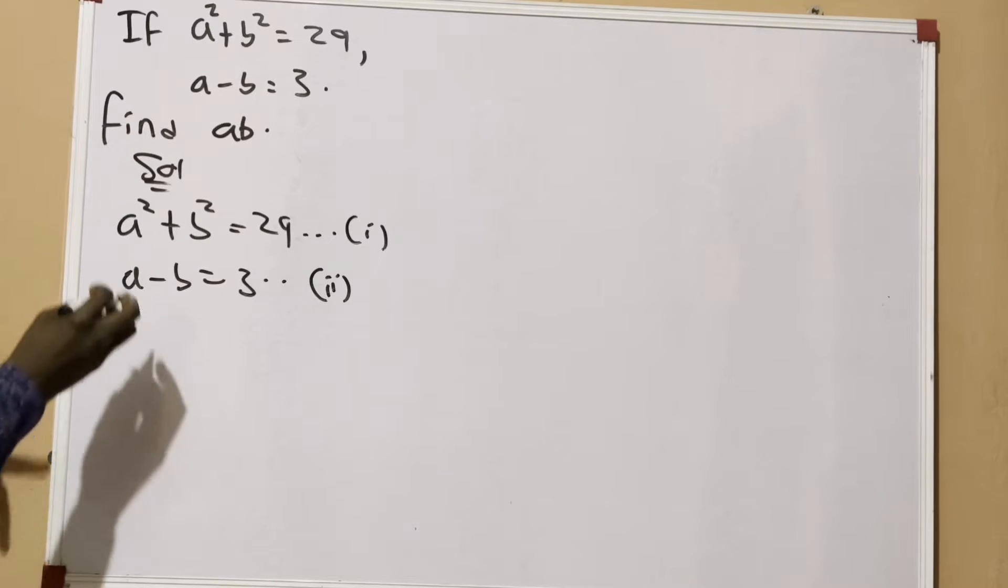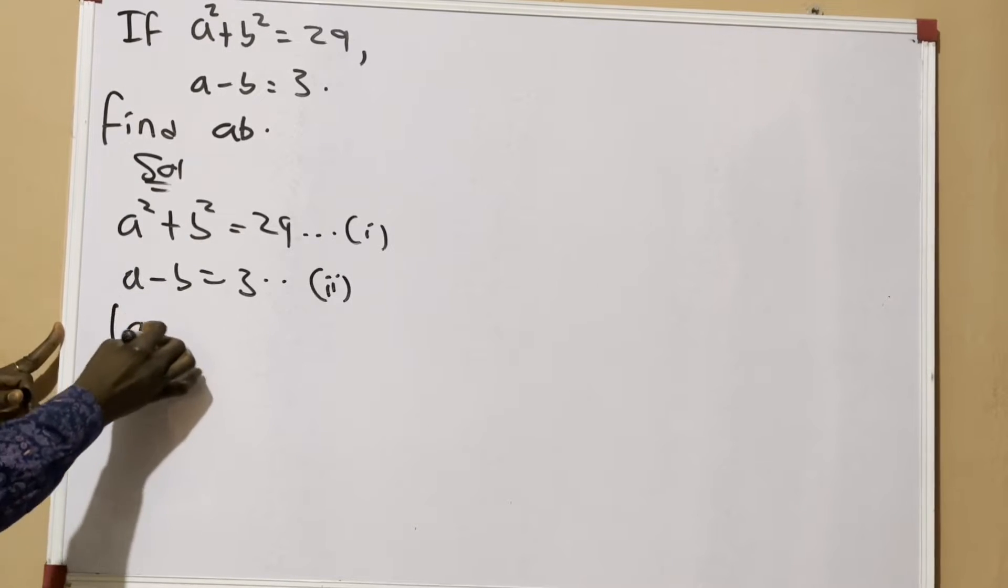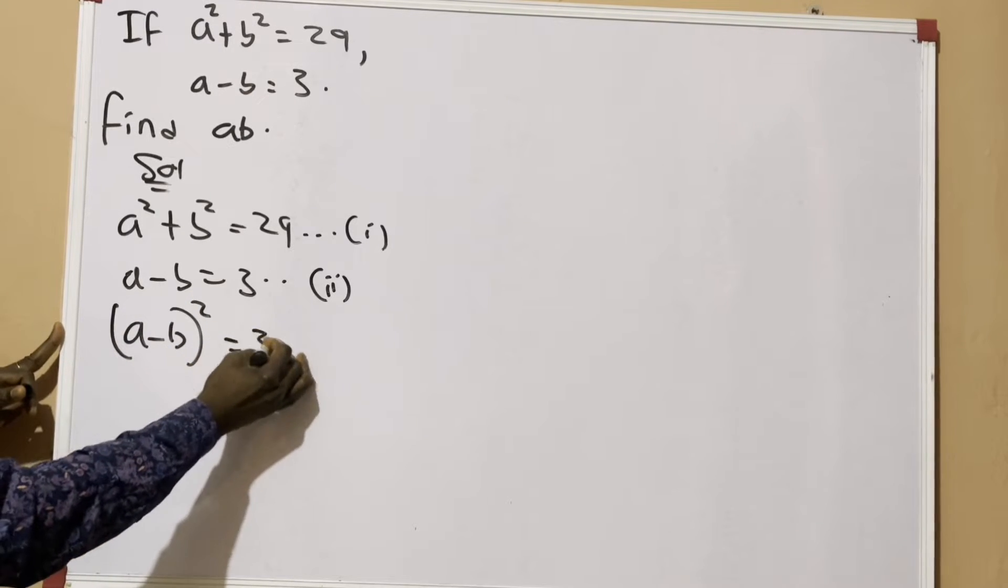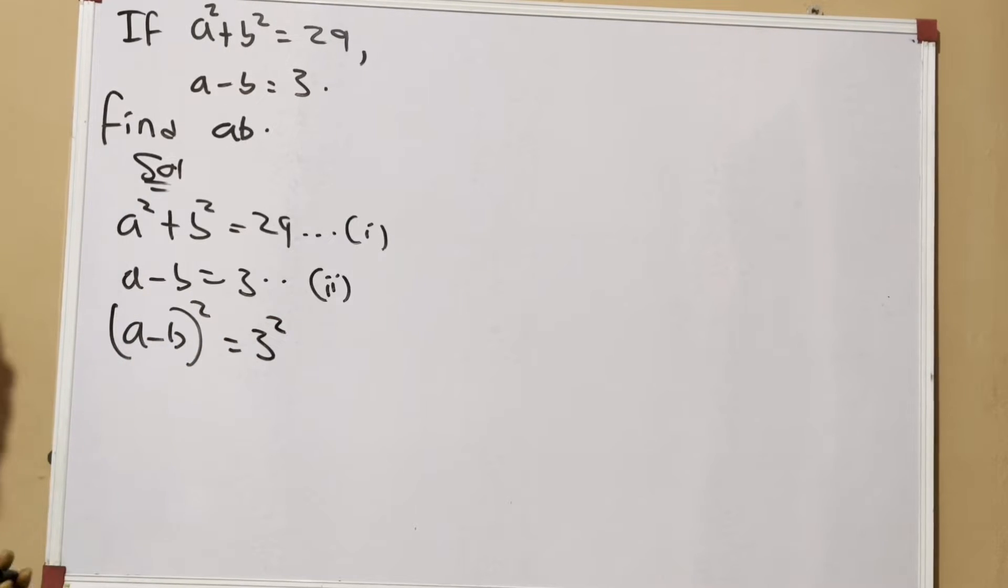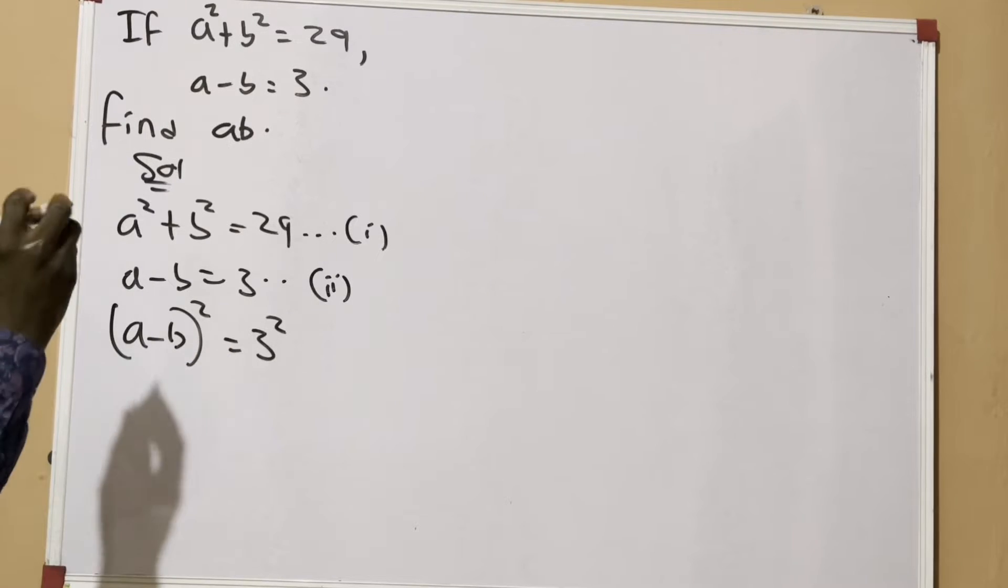If we do this, we're going to have (a - b)² = 3². Whatever you do to the left hand side of the equation, you also should do to the right hand side. Now if we should expand (a - b)², we are going to get...